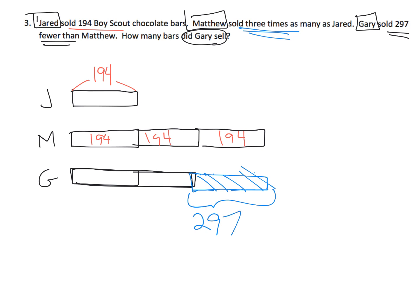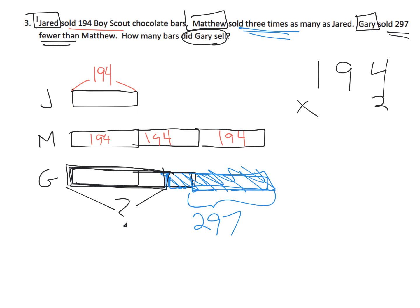If I wanted to be more precise, I would have made Gary's bar a little shorter and the missing blue part a little longer. Our strategy: first we're going to take 194 and multiply by 3, because that tells us how many Matthew sold. Then we take that answer and subtract 297 to get how many Gary sold.